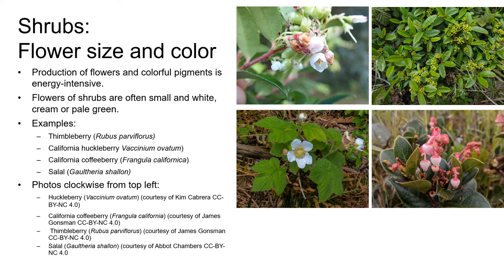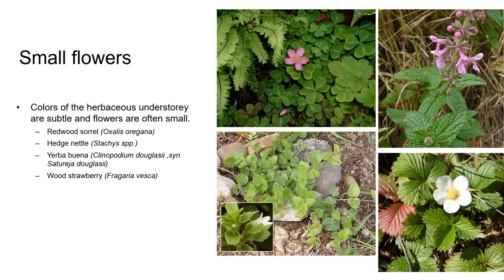The production of flowers and petals that have colourful pigments is energy intensive, so the flowers of shrubs in the forest tend to be fairly small and are often white, cream, or pale green. Examples include huckleberry, California coffeeberry, thimbleberry, and salal.